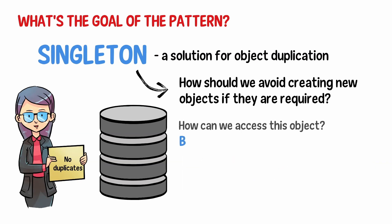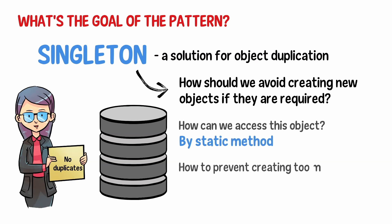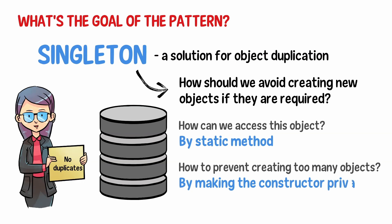How can we access this object? By static method. And how to prevent creating too many objects? By making the constructor private — no one will be able to use it except the class itself.